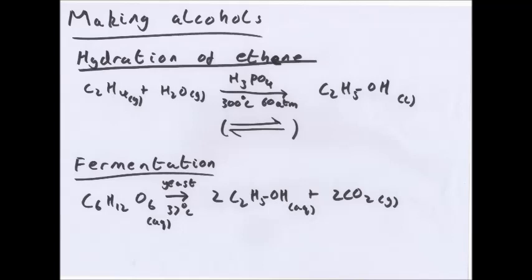And also fermentation is the other method. Glucose becomes 2 ethanol plus 2 carbon dioxide under the conditions of yeast and 37 degrees Celsius. The yeast acts almost like a catalyst for the reaction. It's anaerobic respiration because there's no oxygen, but there's two products, so it's not 100% atom economy.